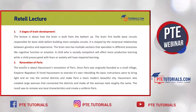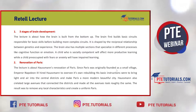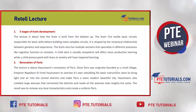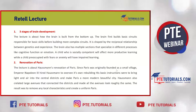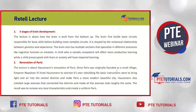The answer is: Renovation of Paris. The lecture is about Haussmann's renovation of Paris. Since Paris was originally founded as a small village, Emperor Napoleon III hired Haussmann to oversee its rebuilding. His basic instructions were to bring light and air into the central district and make Paris a more modern, beautiful city. Haussmann created large avenues connecting the districts, made avenues look roughly the same, and the result was to remove local characteristics and create a uniform Paris.